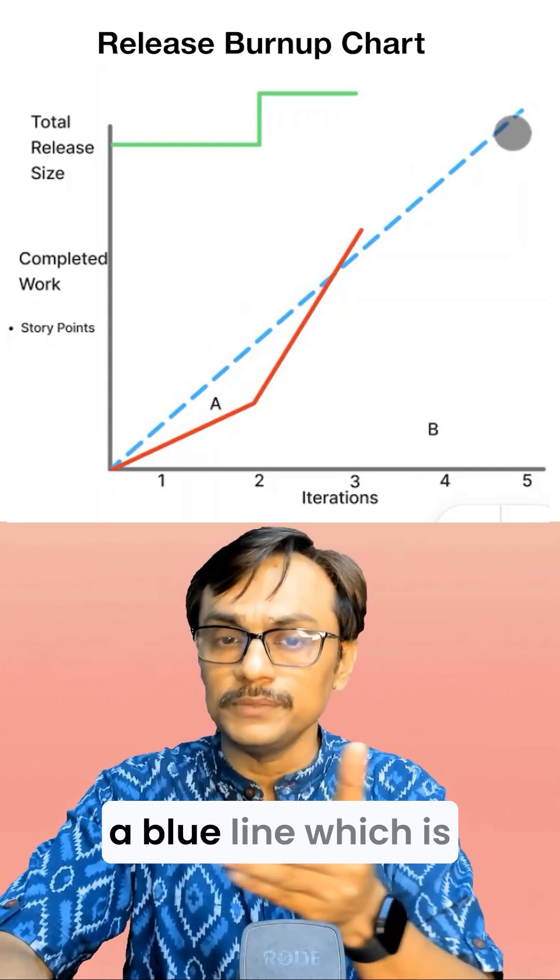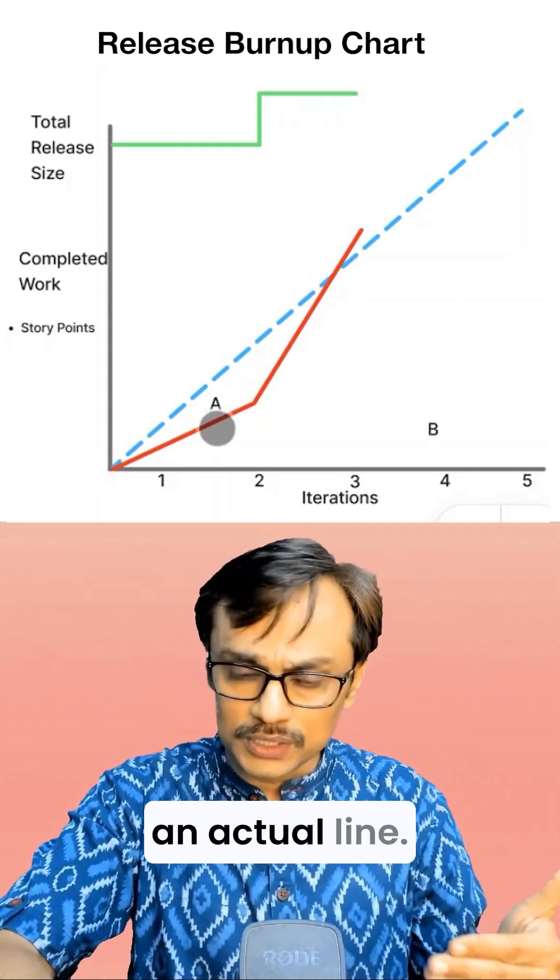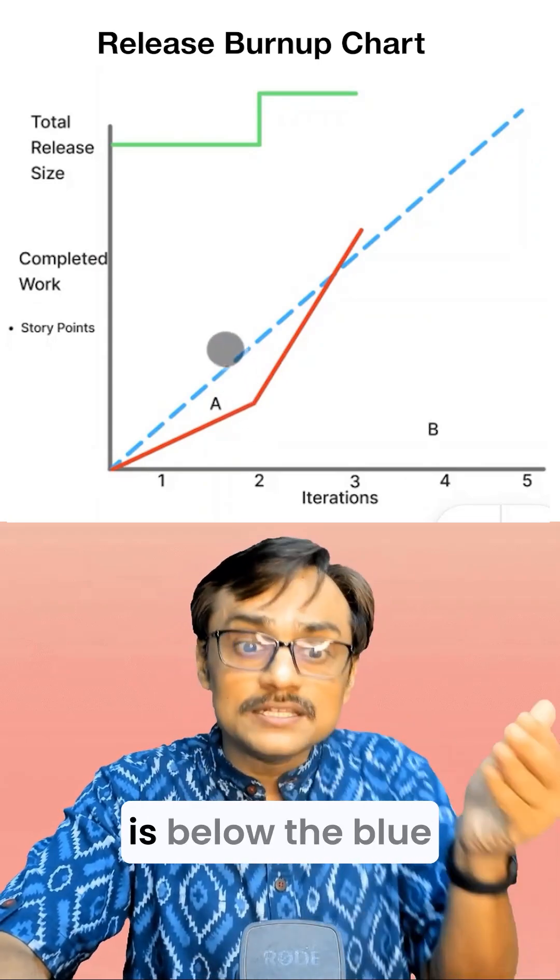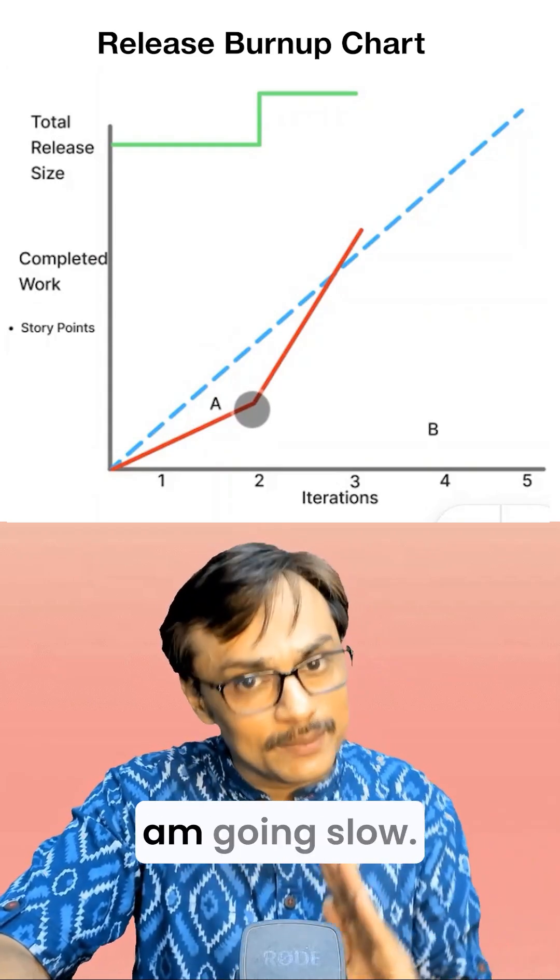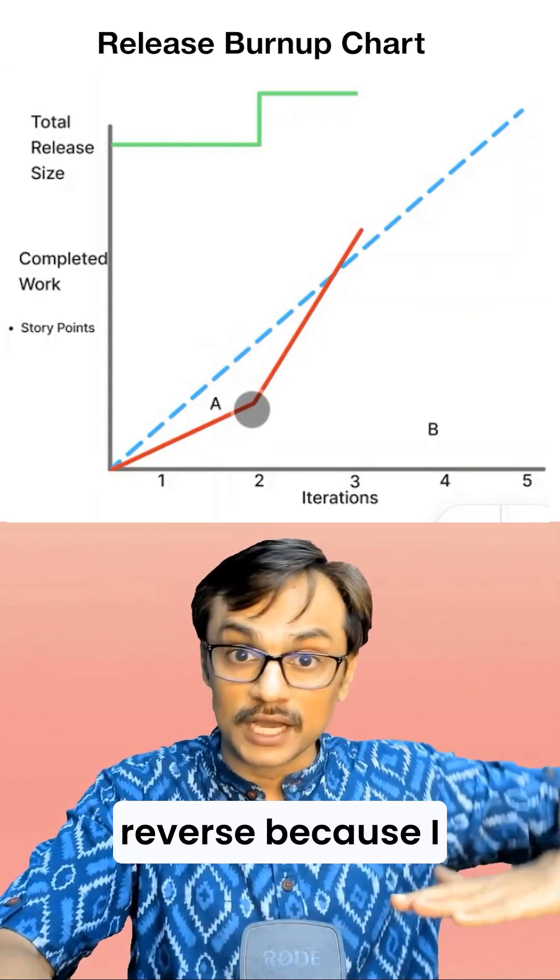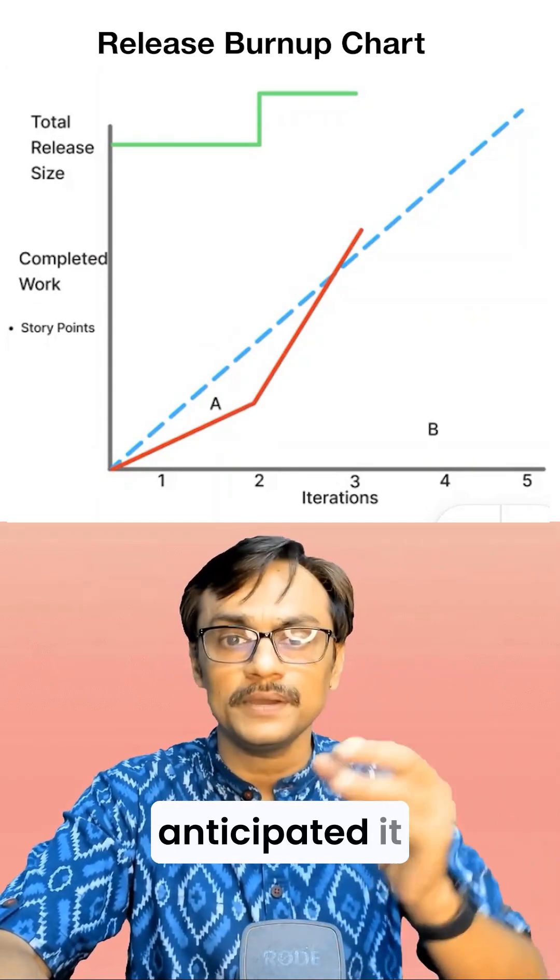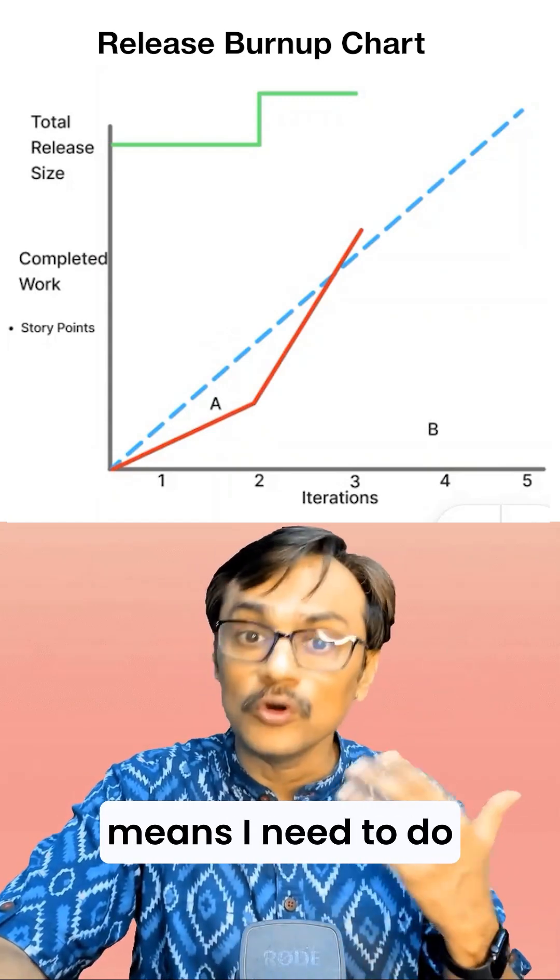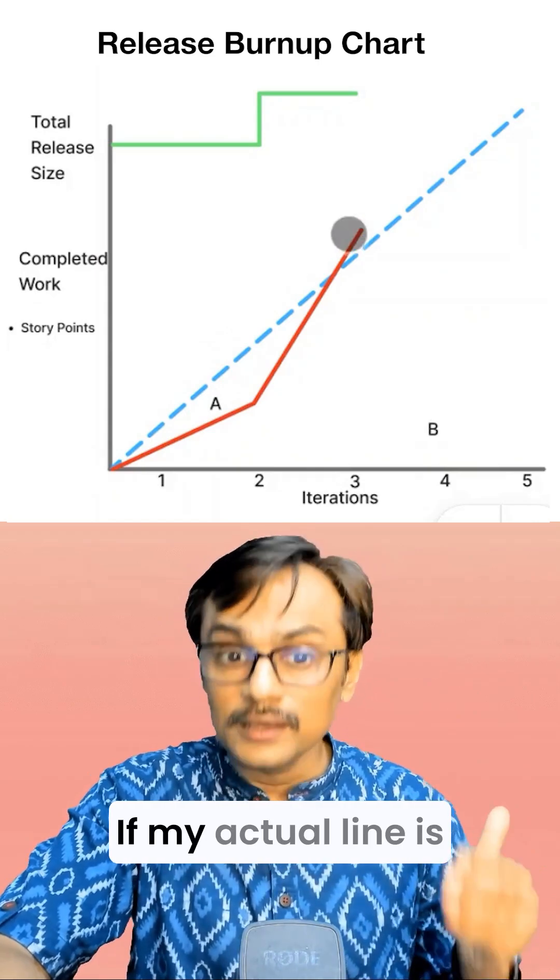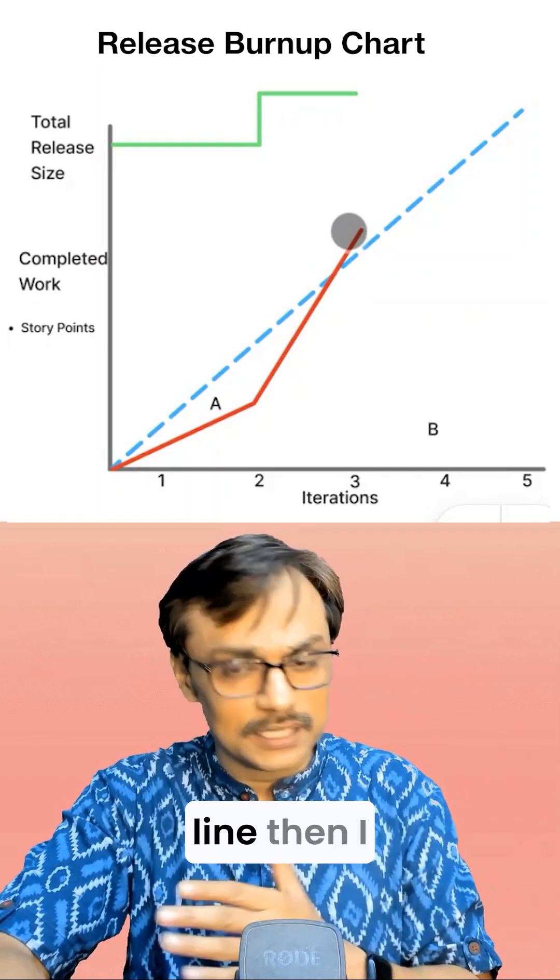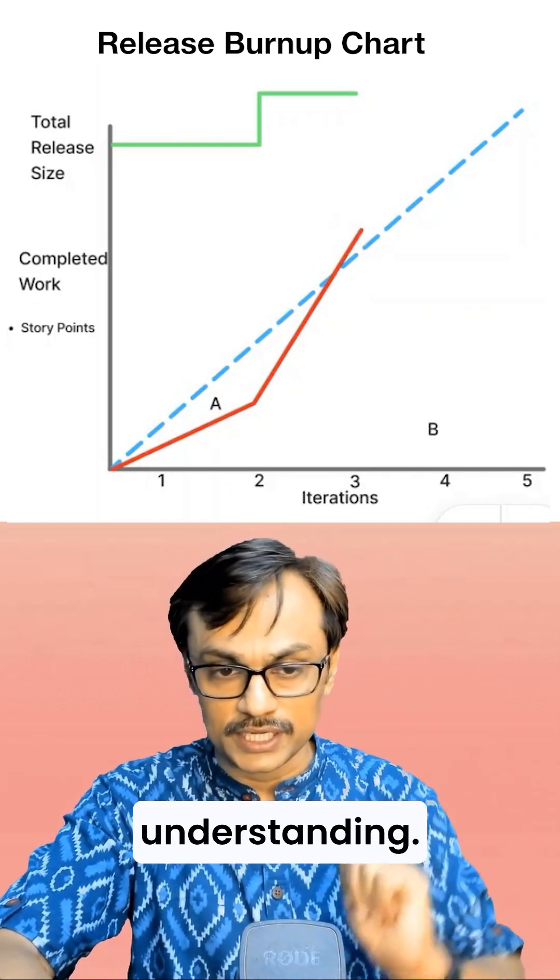Here also I am putting a blue line which is an expected line and then you have a red line which is an actual line. If my actual line is below the blue line in case of point A then I am going slow. If I'm below the anticipated it means I need to do more in order to catch up the release forecast. If my actual line is above the expected line then I am doing fast.